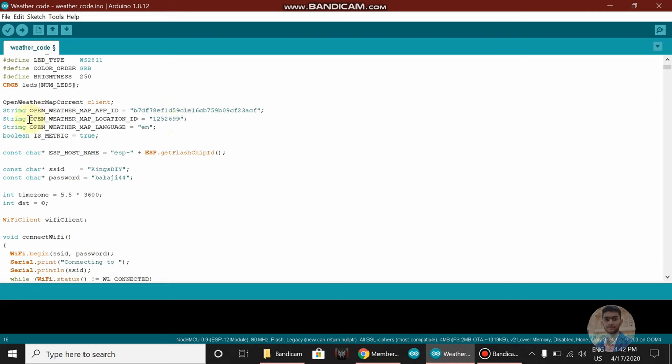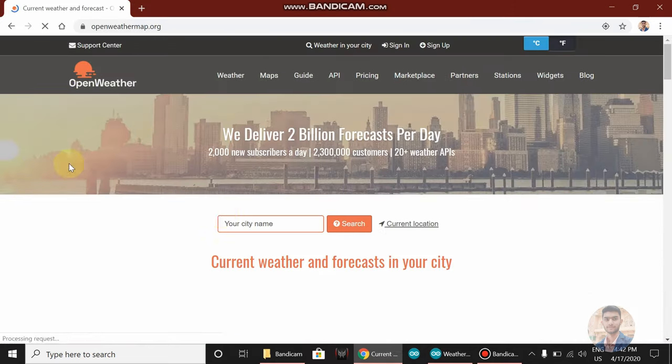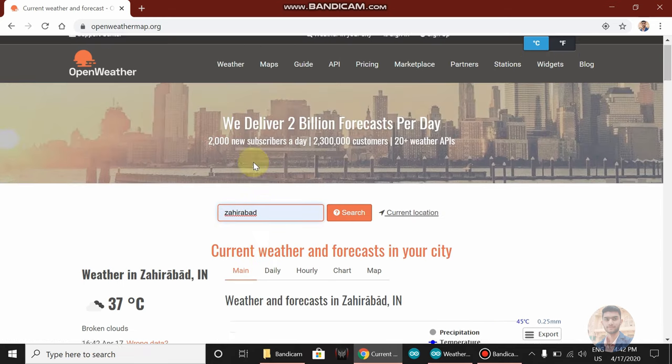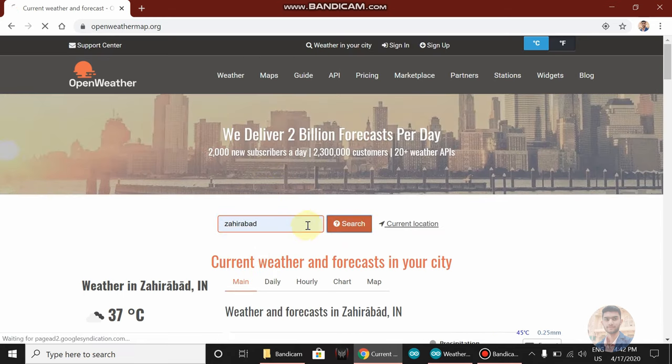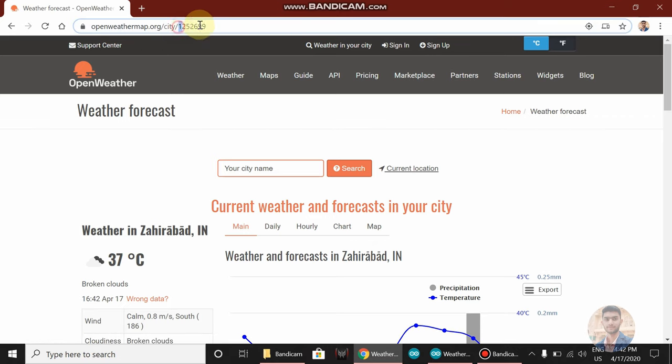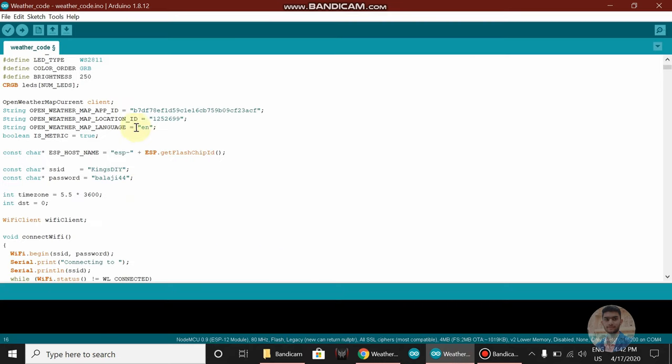Now it's asking for the OpenWeatherMap location ID. You can get this from the same website. Click on the website, search your location, and open that location. As you can see, this is the map ID. Copy this and paste it in your program.